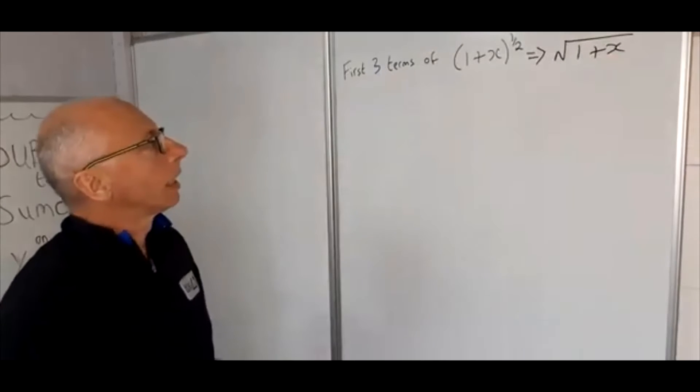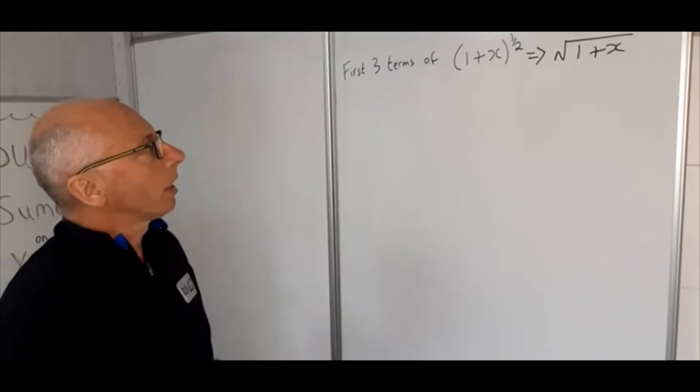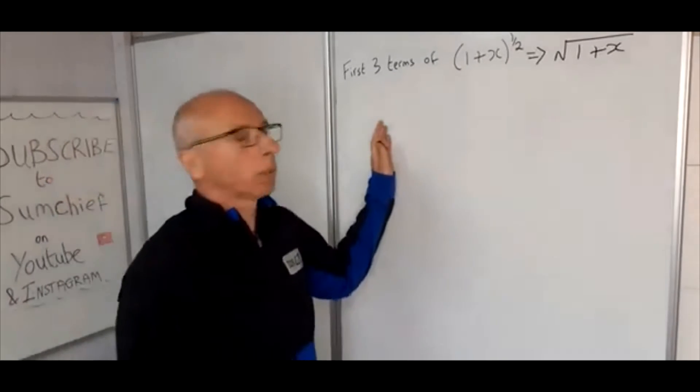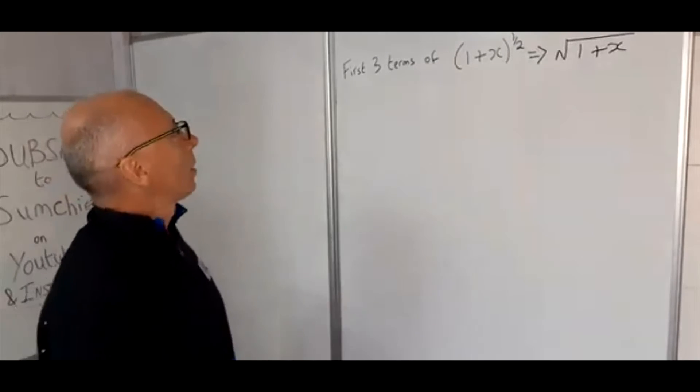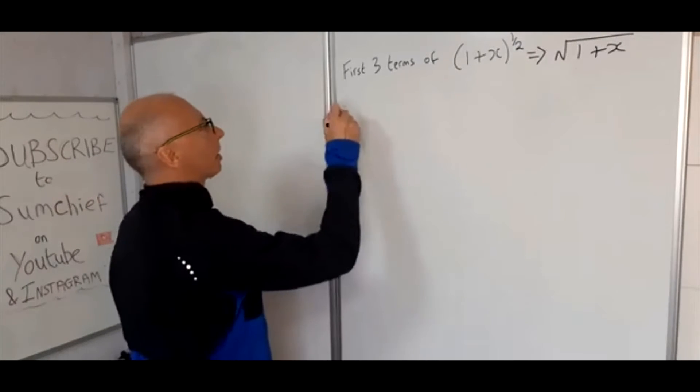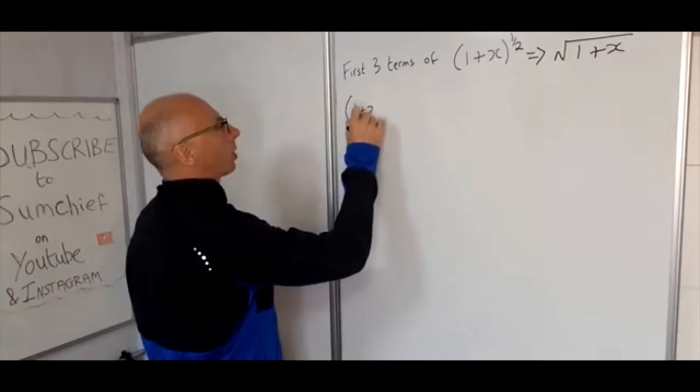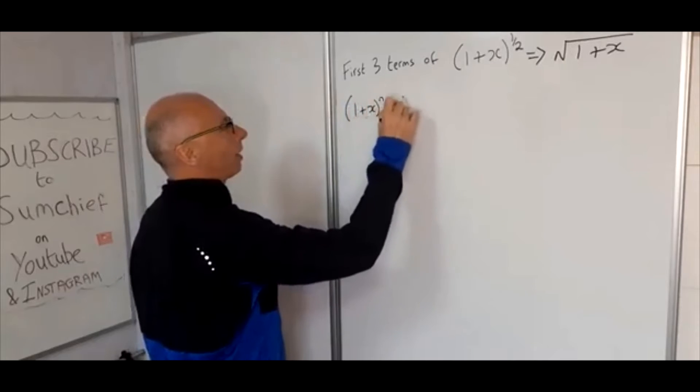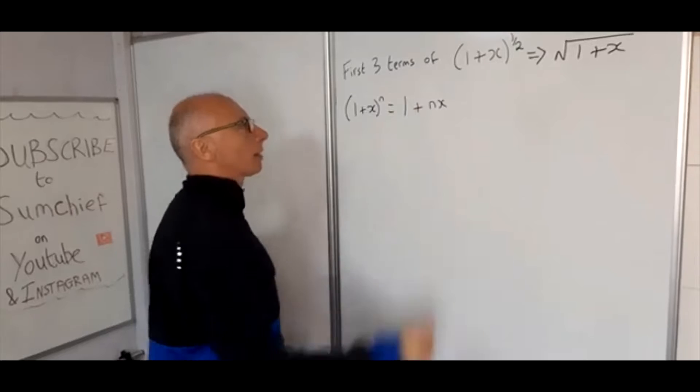Now what we're looking for is the first three terms in the binomial expansion formula. The binomial expansion formula is like this: (1+x) to the power of n equals 1 plus n times x...